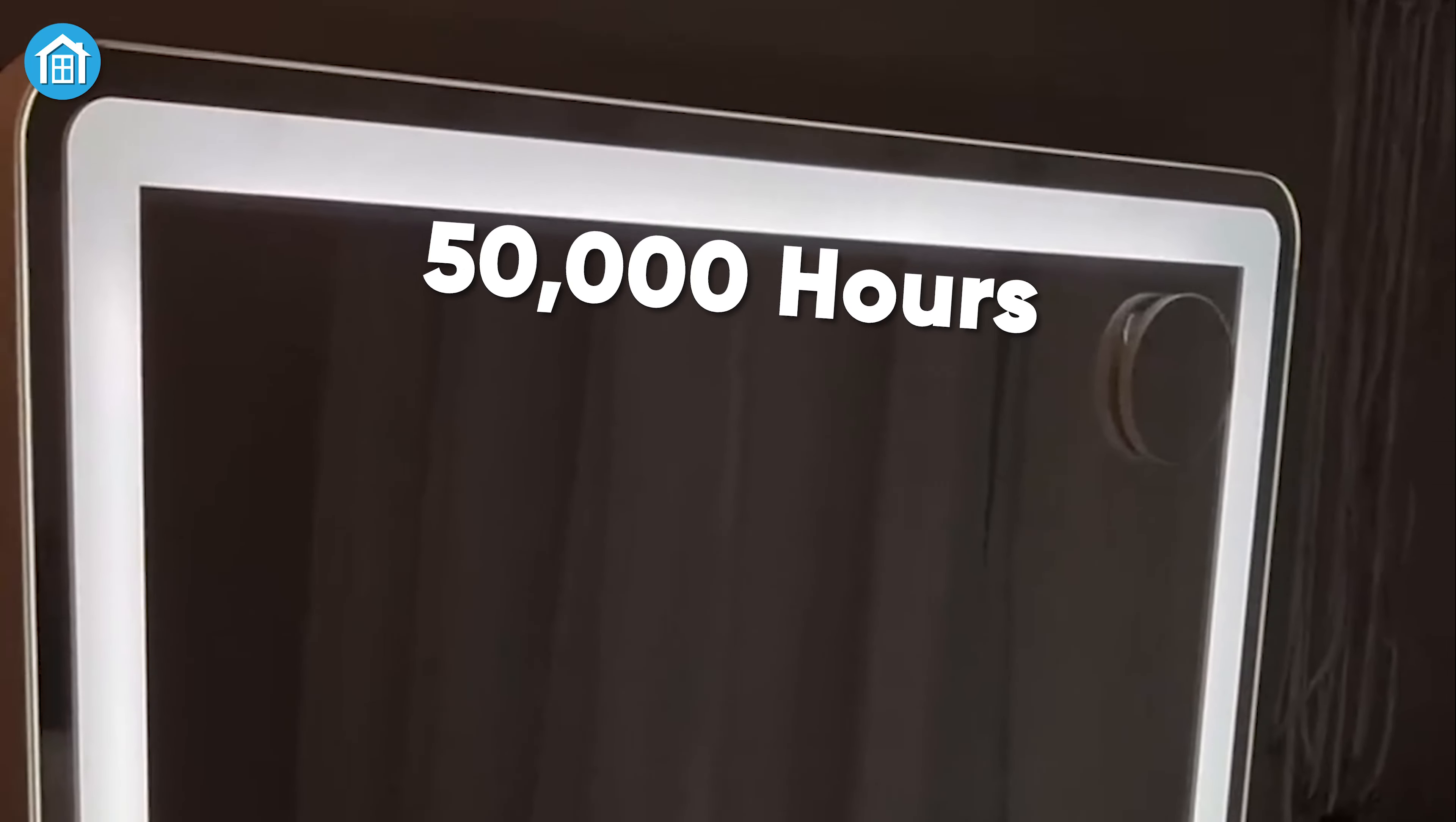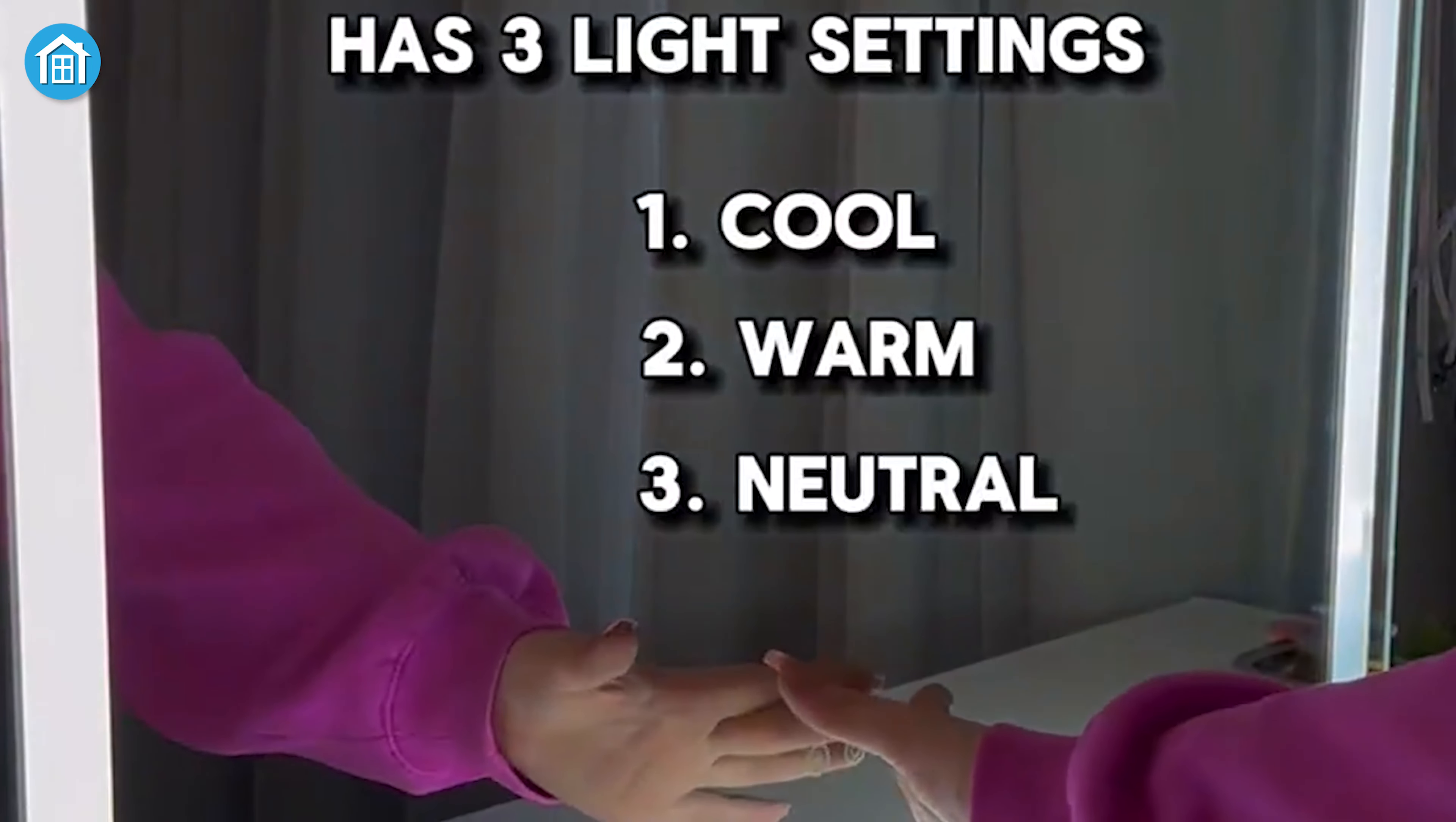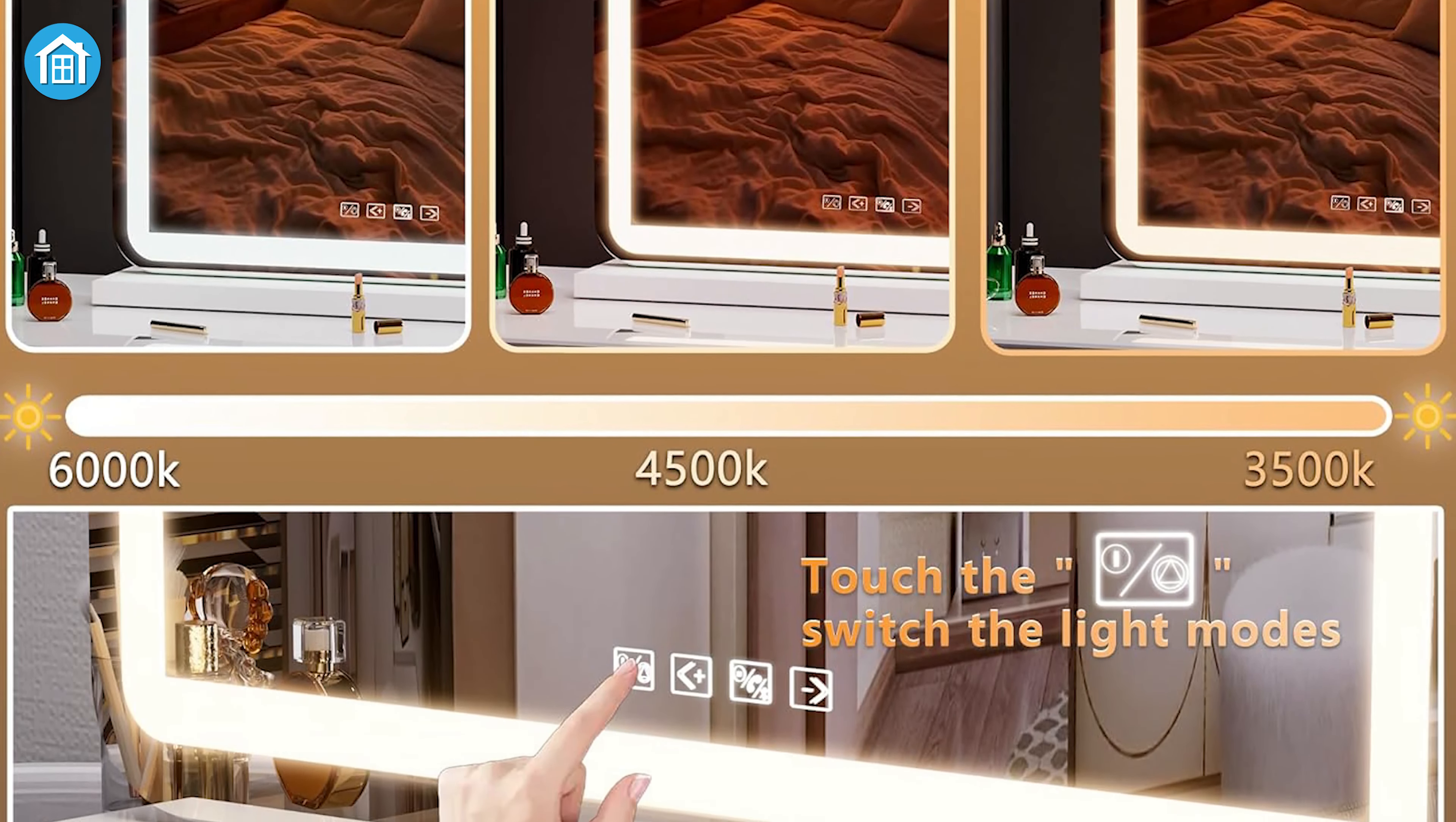Surrounded by a high-brightness LED light strip with a 50,000-hour lifespan, this mirror offers three color lighting modes: warm, natural, and cold white. Adjust the brightness from 0% to 100% to meet all your makeup needs. The smart touch control and memory function ensure your preferred settings are always saved.